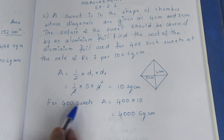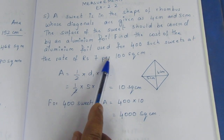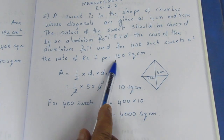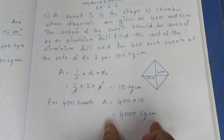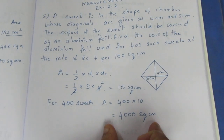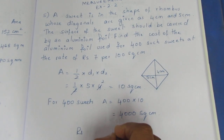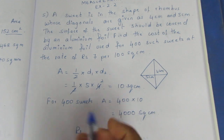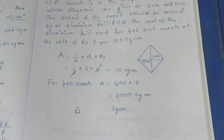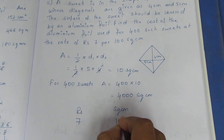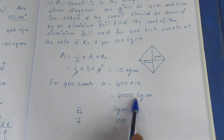Total area for 400 suites is 4,000 square centimeters. The rate is ₹7 per 100 square centimeters. To find the cost, we cross multiply: 7 into 4,000 is equal to 100 into x. Dividing both sides by 100, x is equal to 7 into 4000 divided by 100.